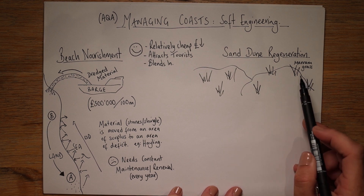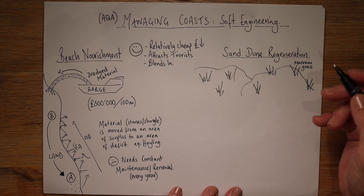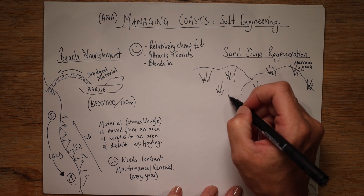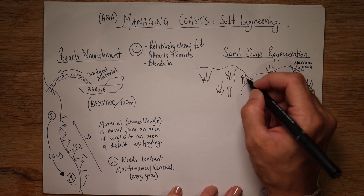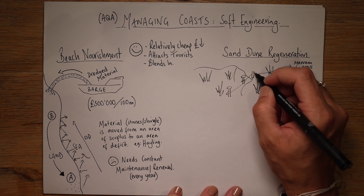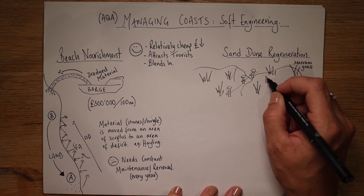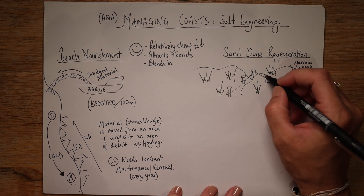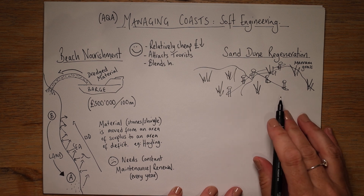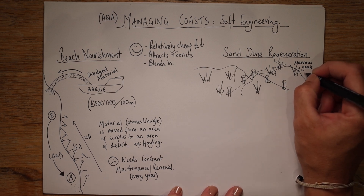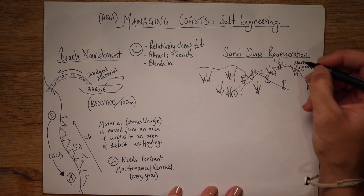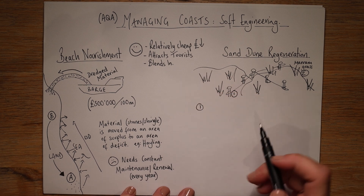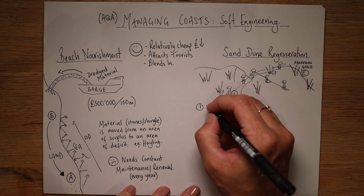Marram grass is extra special because it can grow right by the sea — it doesn't mind the salt. Its roots do mind the salt though, so if they become exposed it can get into trouble, but for the most part it's absolutely fine. There are also fence posts on the dunes — these have a proper name, they're called dune fencing. They're built carefully on the seaward side, nearest the sea.